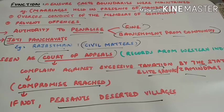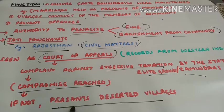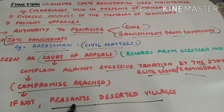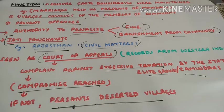Usually a compromise was reached because if peasants deserted the villages, the entire machinery would collapse — agriculture was heavily dependent on labor, it was labor intensive. If there was no labor, the state would lose revenue since the majority of state revenue came from agriculture. So it was essential to ensure that the interests of peasants were met.